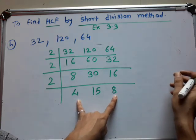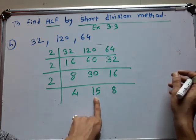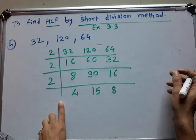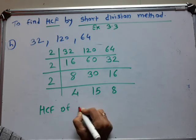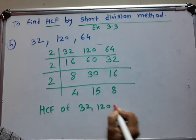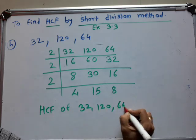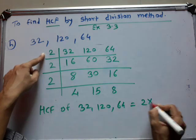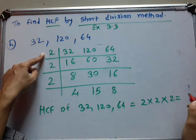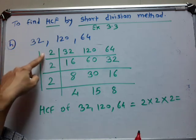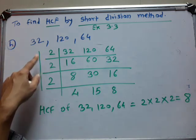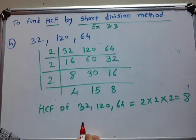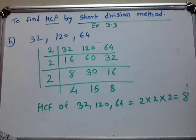Both 4 and 8 are even numbers but 15 is an odd number. So these numbers cannot be divided again by a common number. So the SCF of 32, 120, and 64 is 2 multiplied by 2 multiplied by 2. These are the common factors. So 2 times 2 are 4, and 4 times 2 are 8. So 8 is the SCF of 32, 120, and 64 by the short division method.